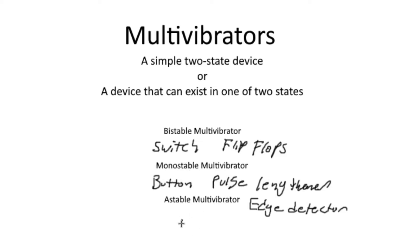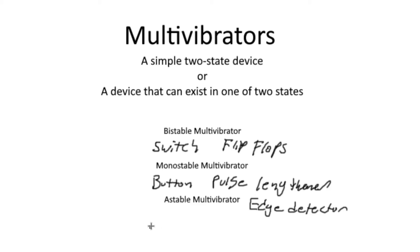The last multivibrator circuit is the astable multivibrator. Bistable means two stable states, monostable means one stable state — so astable, recalling that the 'a' prefix means no or none, means no stable state. An astable multivibrator has no stable state, meaning that no matter what state you're in, you want to get out of it.